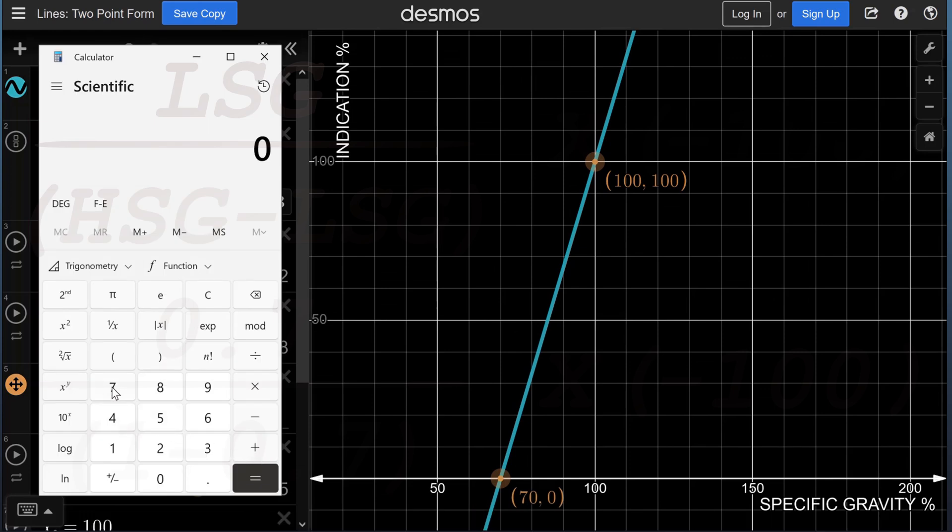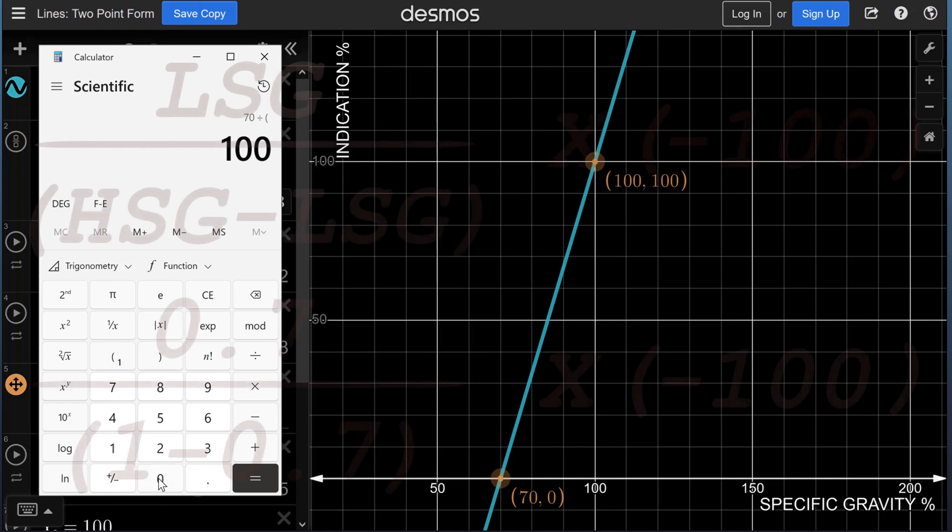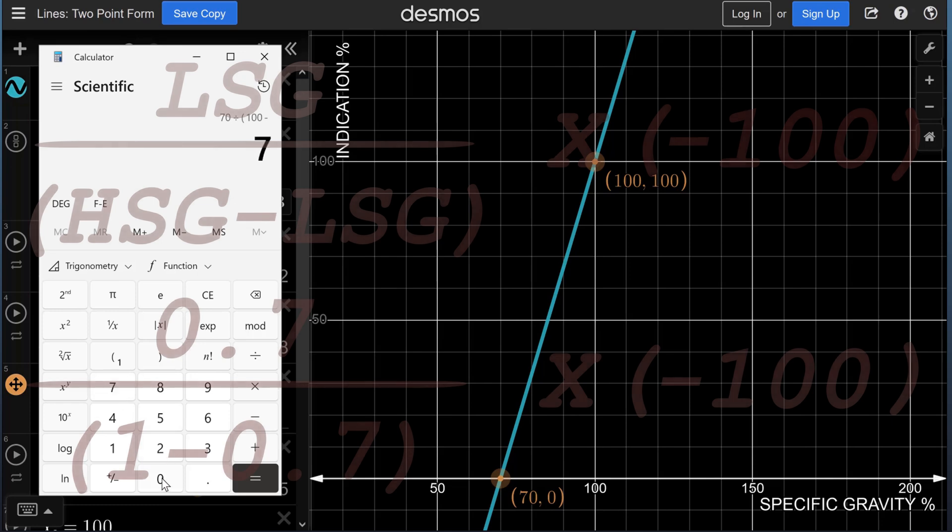Let us make a verification. We will put the value of the lighter liquid, which is 70, divided by the difference of the heavier, which is 100, minus the lighter, which is 70. And we multiply the entire fraction times minus 100. It's the same value.